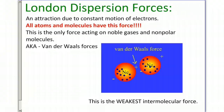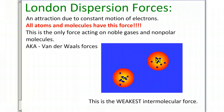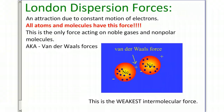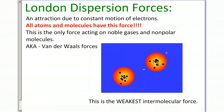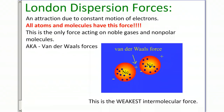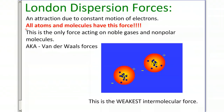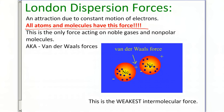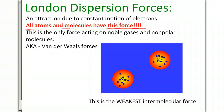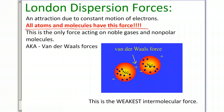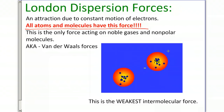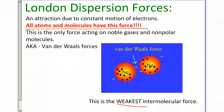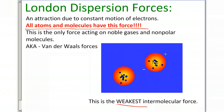London dispersion forces are very simple — it's an attraction due to the constant motion of electrons. Since all atoms and molecules have moving electrons, all atoms and molecules have this force. This is the only force that noble gases and nonpolar molecules have, and these are also called Van der Waals forces. This is the weakest intermolecular force of all three.